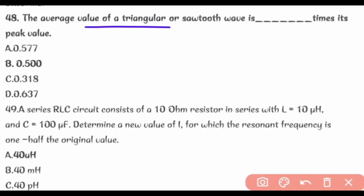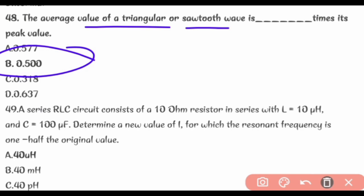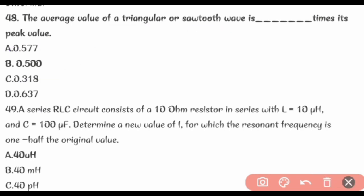The average value of a triangular or sawtooth wave is 0.5 times its peak value.